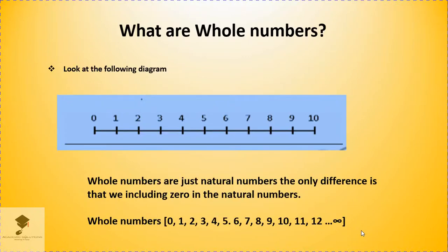So what are whole numbers? Whole numbers are just natural numbers. The only difference is that we are including 0 in the natural numbers. So our whole numbers, looking at the number line, will start from 0, 1, 2, 3 and then continues till infinity.